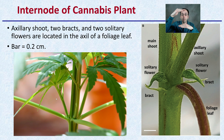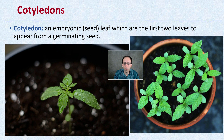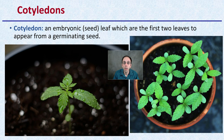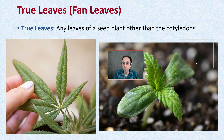Then we get to the cotyledons. These are the embryonic or seed leaves, which are the first two leaves to appear from a germinating seed. They tend to be more rounded in appearance. We can see them clearly evident here — it's a nice way to see that seedling come up and be the first leaves to start capturing the sun, so the plant can start the photosynthetic process and begin growing exponentially.